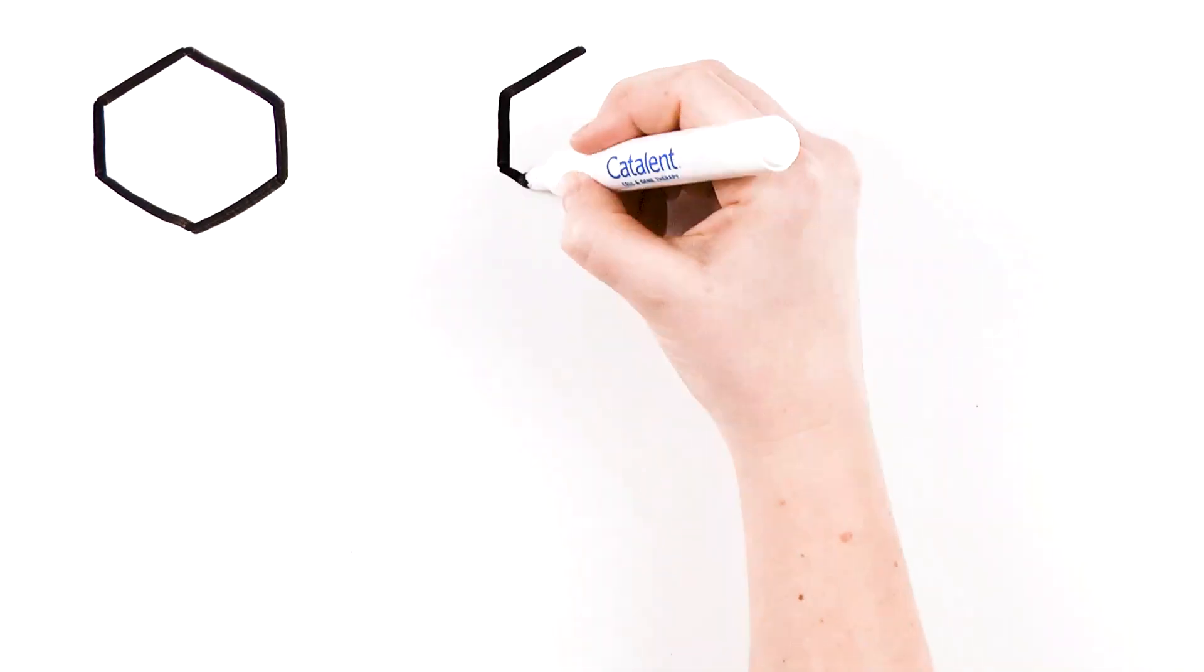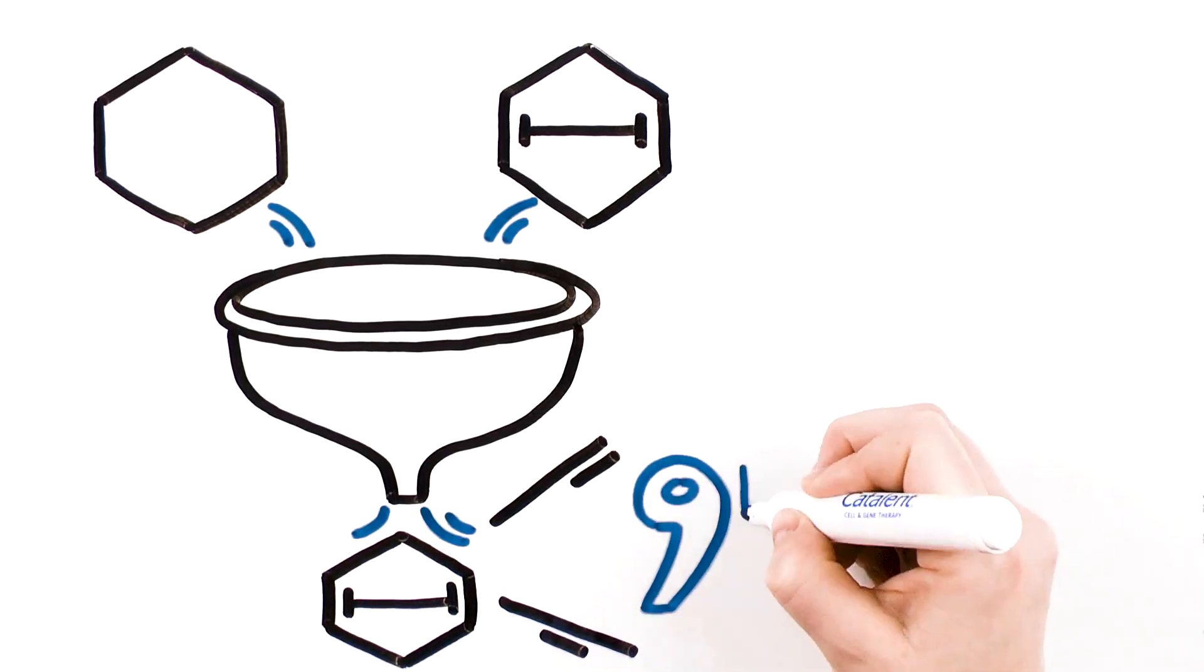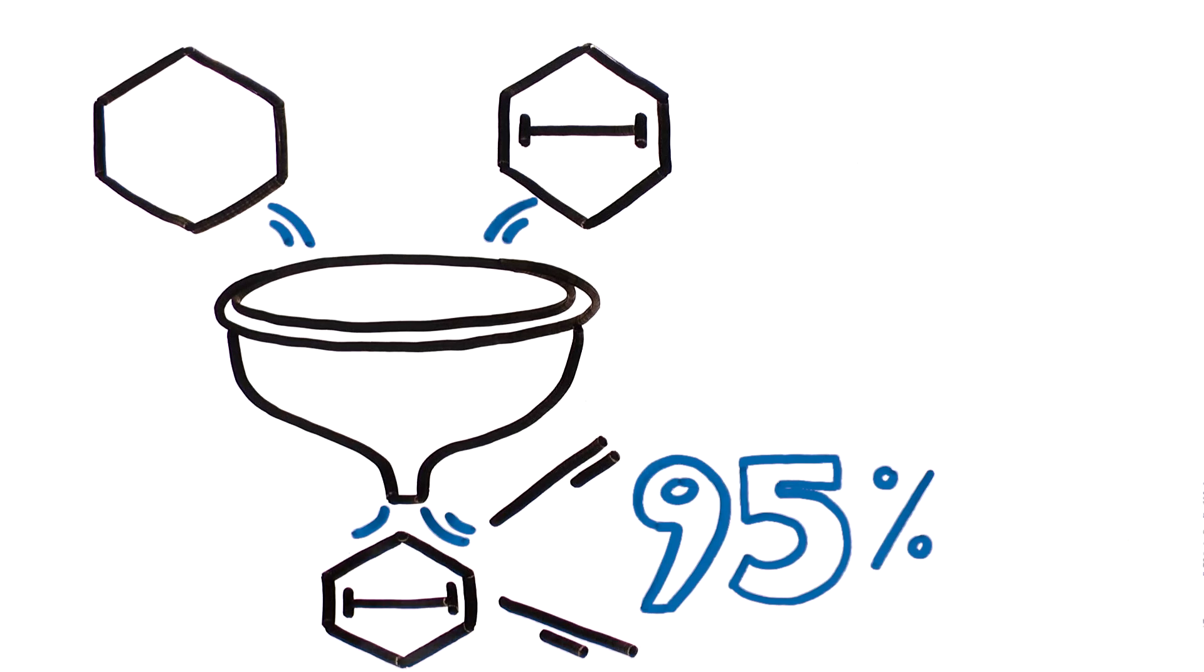Downstream purification steps can help separate the empty and full capsids with the goal of up to greater than 95% full capsids.